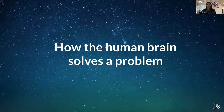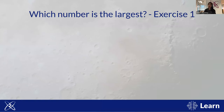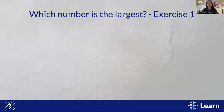Our first exercise is about how the human brain solves a problem. We'll put a bunch of numbers on screen for about four seconds. Your task is to identify the largest number. While doing that, please pay special attention to the thought processes you go through. After the exercise we'll discuss strategies for how most people might have solved this problem. The numbers will appear now.